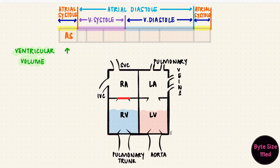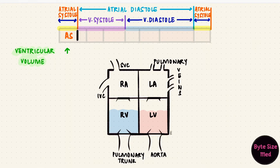At the end of atrial systole, the atrioventricular valves close. Now both the atrioventricular and the semilunar valves are closed and the ventricles contract. This is the end of ventricular diastole and the start of ventricular systole. All the valves are closed; blood neither enters nor leaves the ventricle. This is isovolumetric contraction — the volume doesn't change.